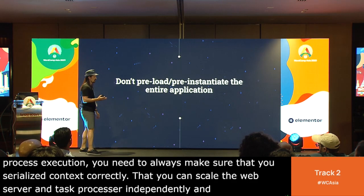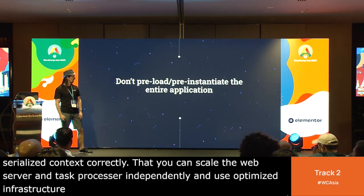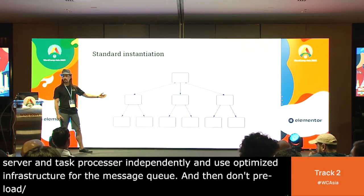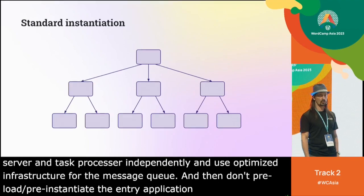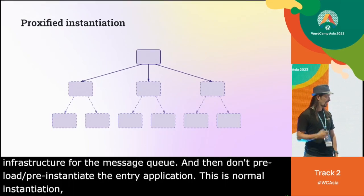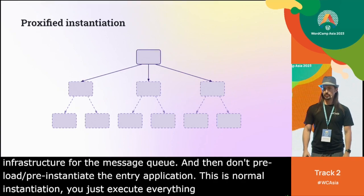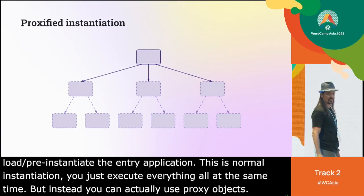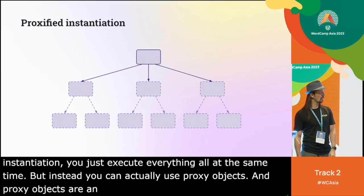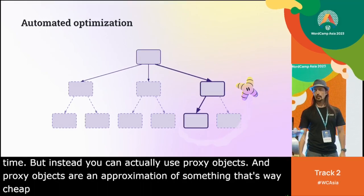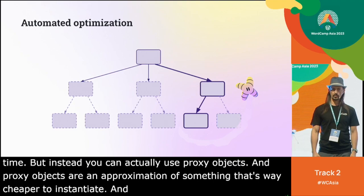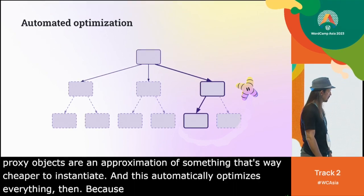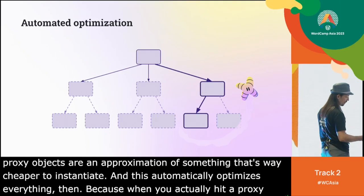Don't preload and pre-instantiate the entire application. Normal instantiation executes everything at the same time — but instead you can use proxy objects. Proxy objects are an approximation of something that's way cheaper to instantiate, and this automatically optimizes everything. When you actually hit a proxy, it turns into the actual object itself.